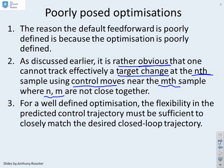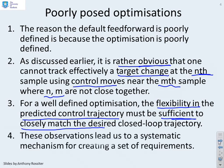For a well-defined optimization, the flexibility in the predicted control trajectory must be sufficient to closely match the desired closed-loop trajectory. If you can't get close to the desired closed-loop trajectory, then your optimization is not particularly well posed. These observations lead us to a systematic mechanism for creating requirements.